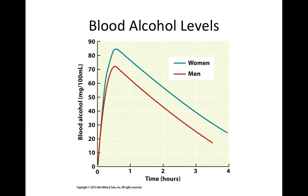Here's a demonstration of blood alcohol levels, with women depicted in blue and men in red. After consuming alcohol, you get a spike in blood alcohol level that dissipates over time. Women, having less alcohol dehydrogenase, absorb more alcohol more quickly and need a longer period to break it down — about three and a half hours compared to four hours for men — before reaching a blood alcohol level considered non-intoxicated.